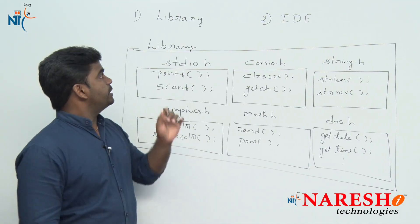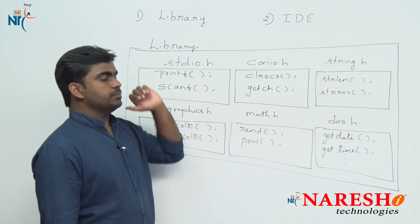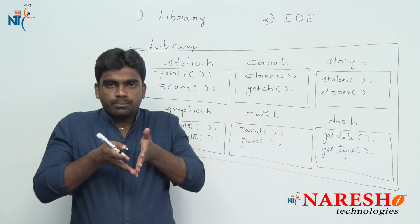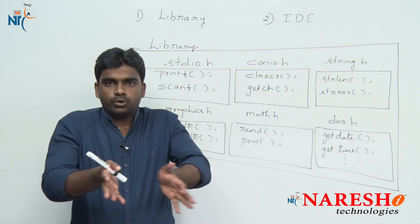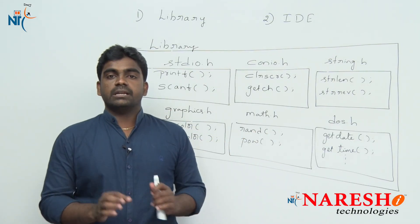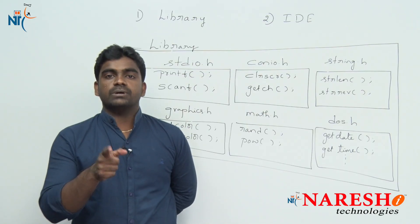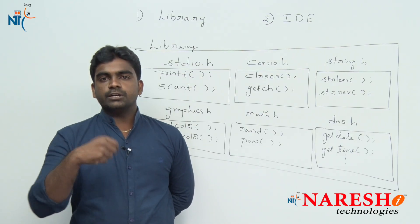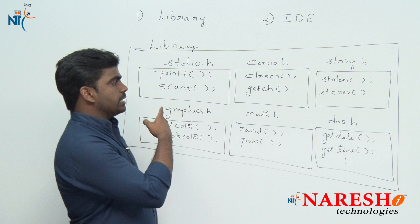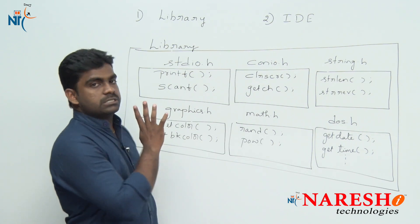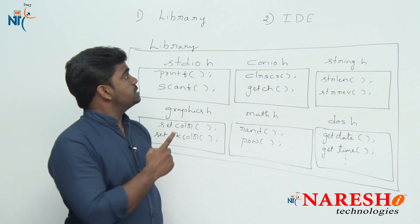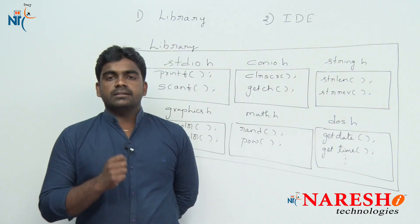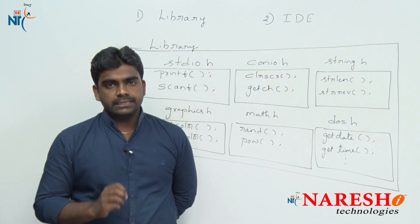This is what we call a library — a set of predefined functions. Why are they divided into multiple header files? For easy access. Ask yourself why we create folders on our computer — the same reason. This is what the C library is. Now the next concept: what is IDE?